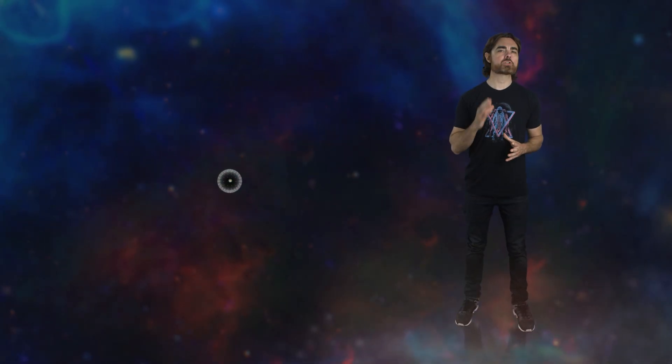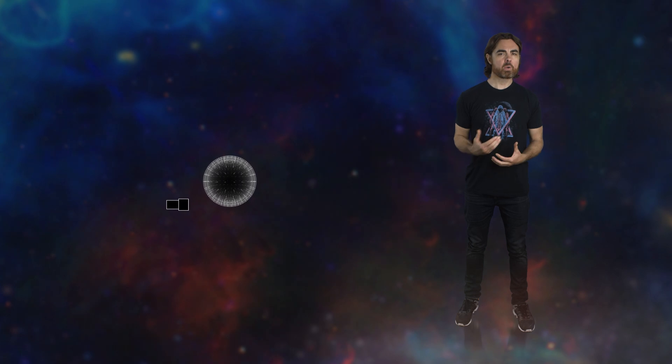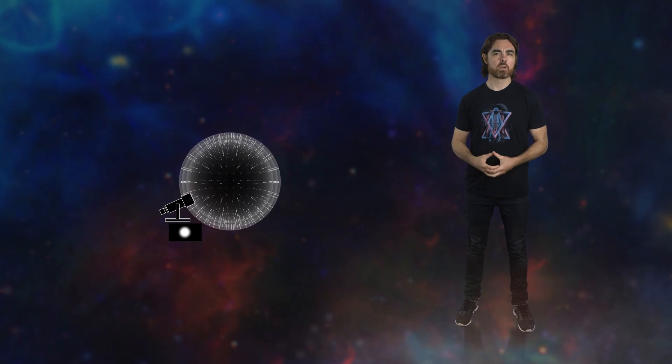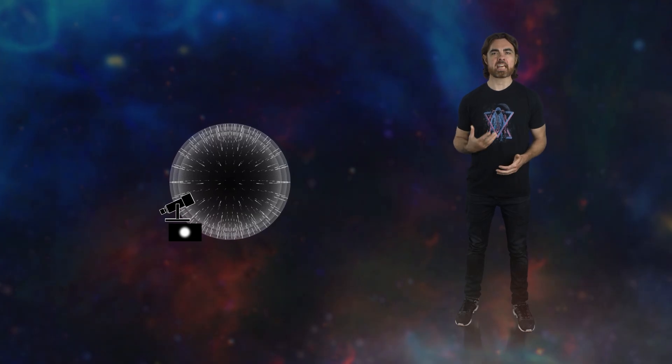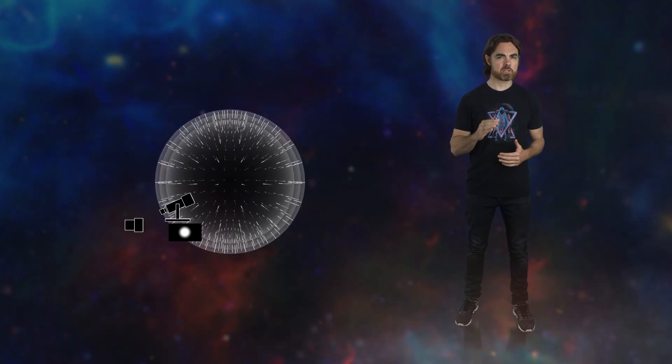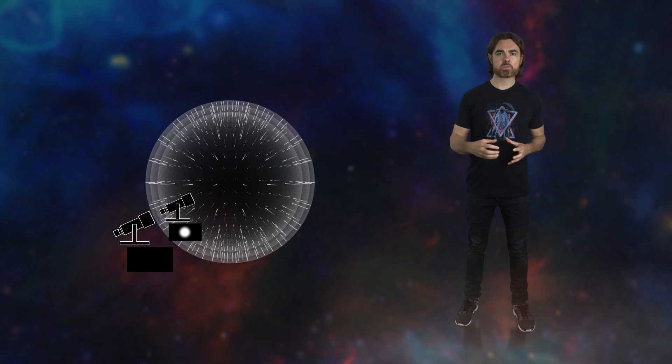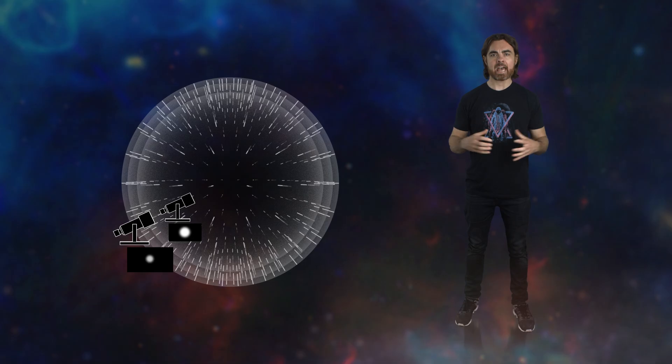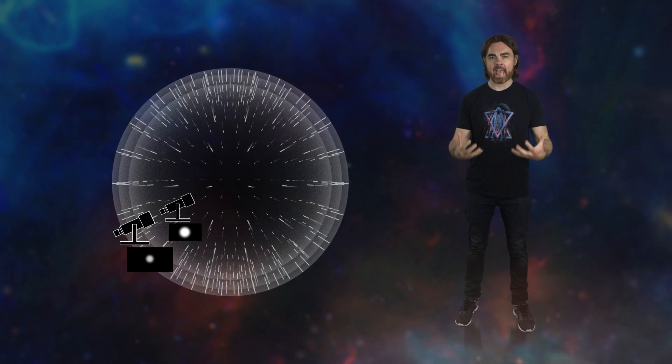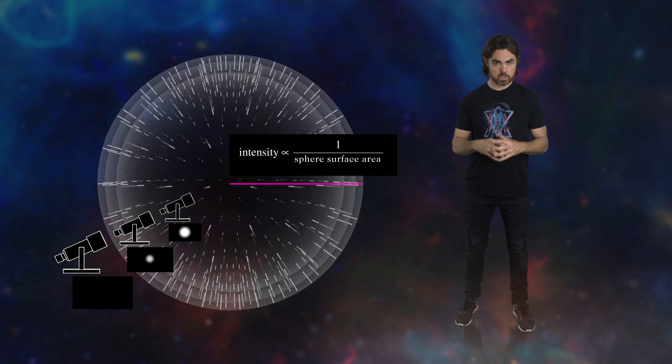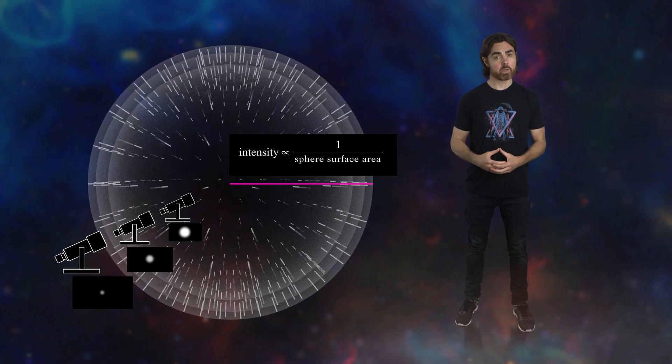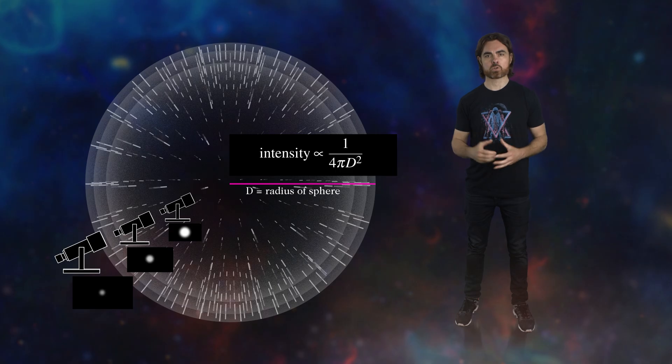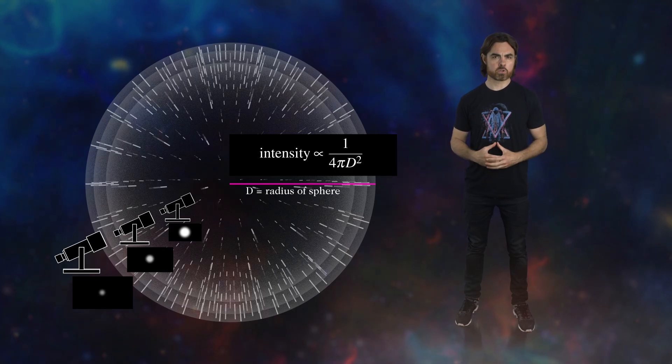Imagine a pulse of light traveling from some distant source. We can think of light rays spreading out evenly over an expanding spherical shell. If we see that pulse, it means our eye or our telescope intercepts some of those light rays. The brightness of the pulse is determined by how many rays we intercept. So as this shell expands, the light rays become more spread out. Intensity drops proportional to the surface area of the shell, which is proportional to the square of its radius, the square of the distance to the source. This is the famous inverse square law.